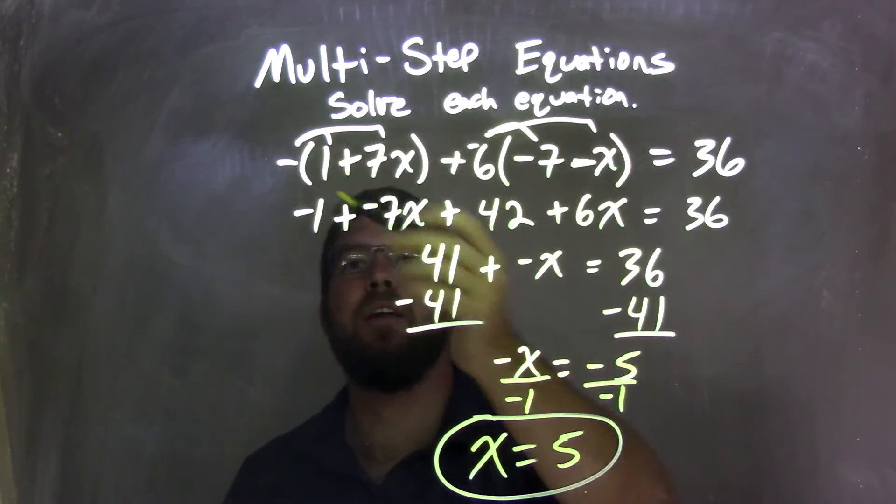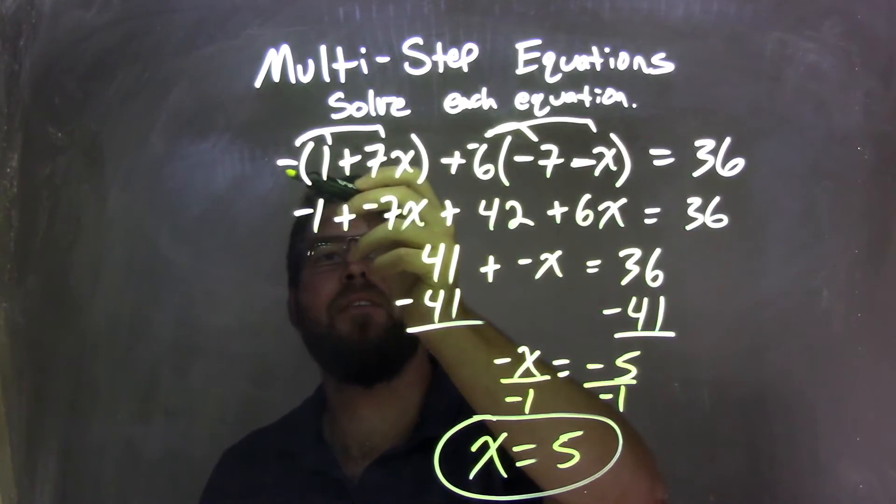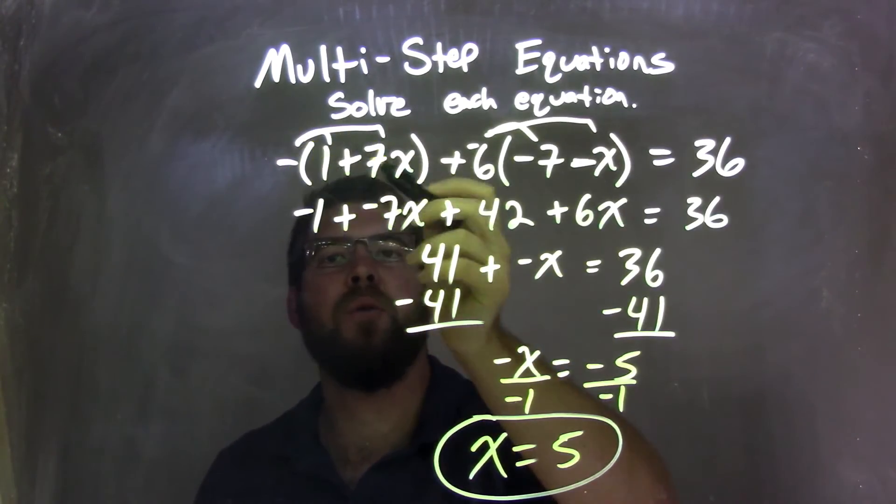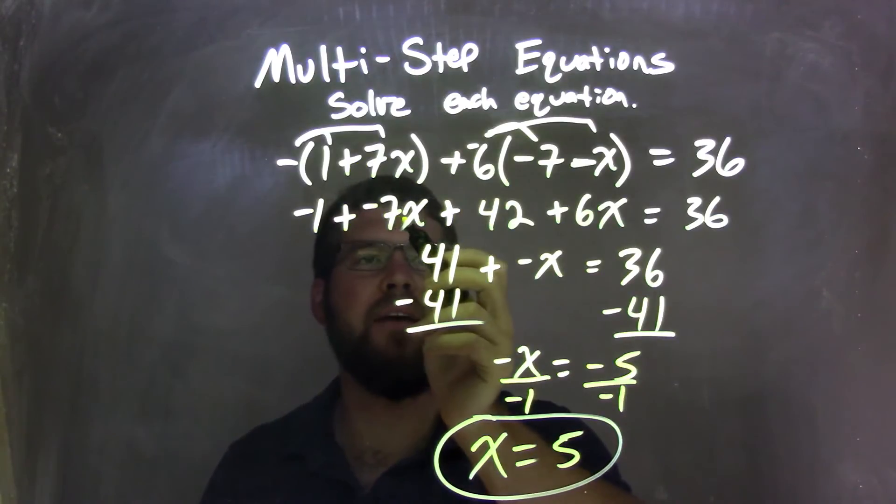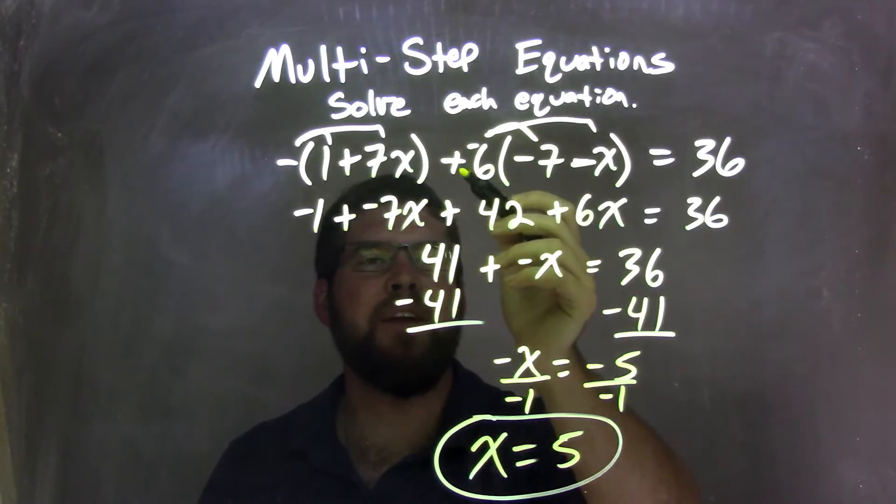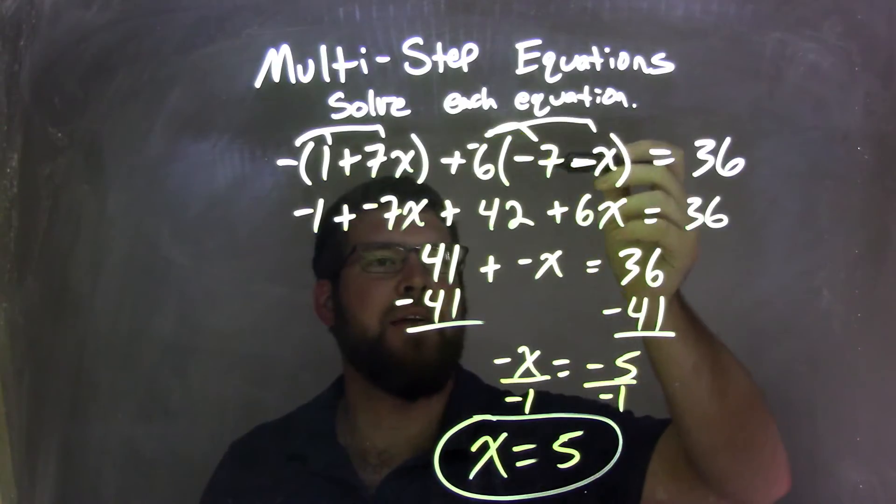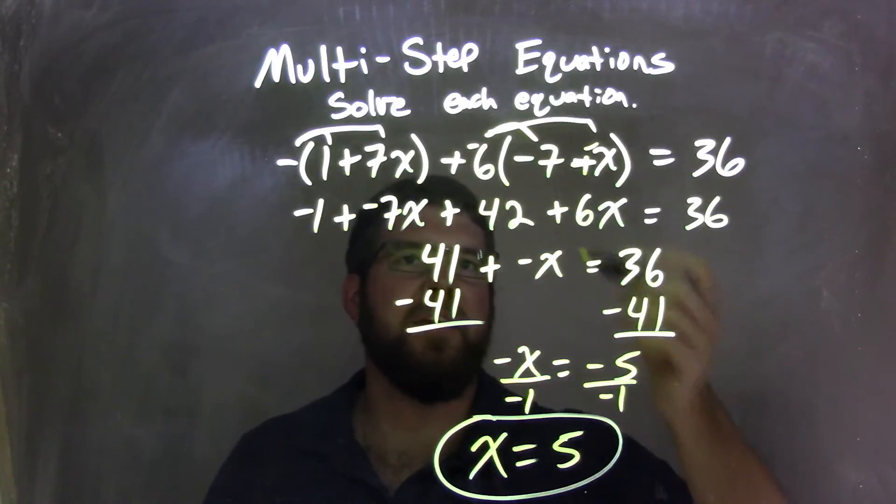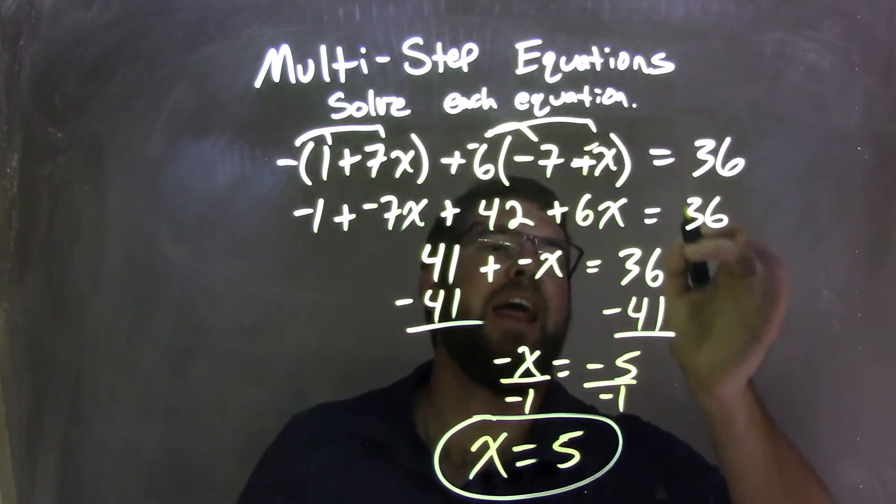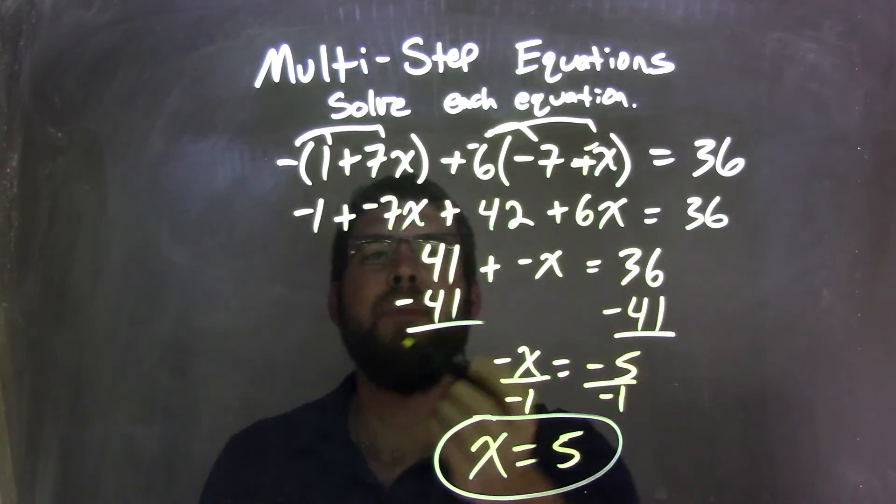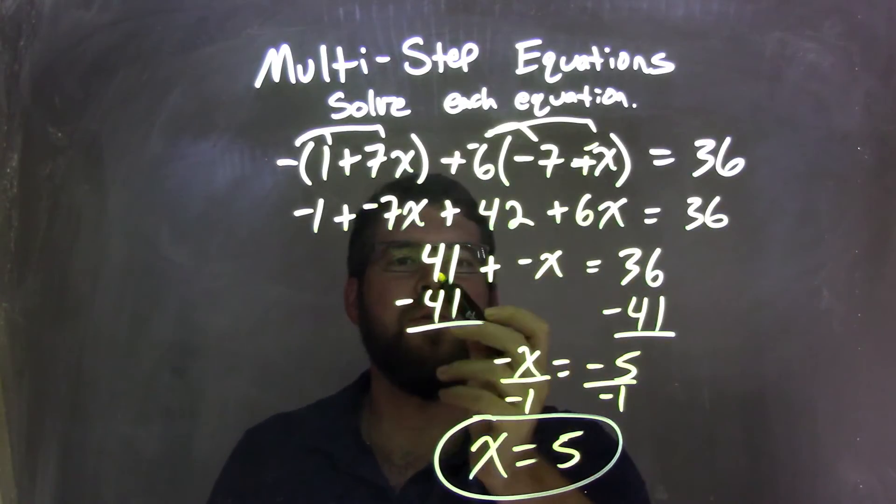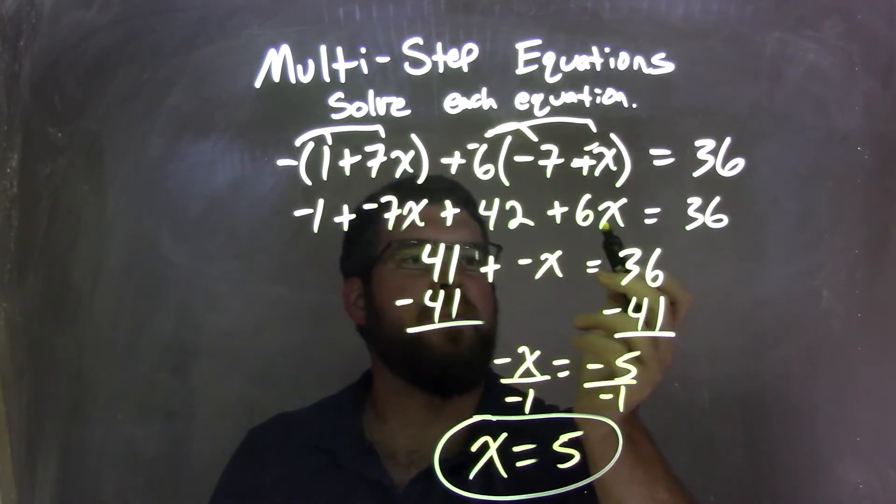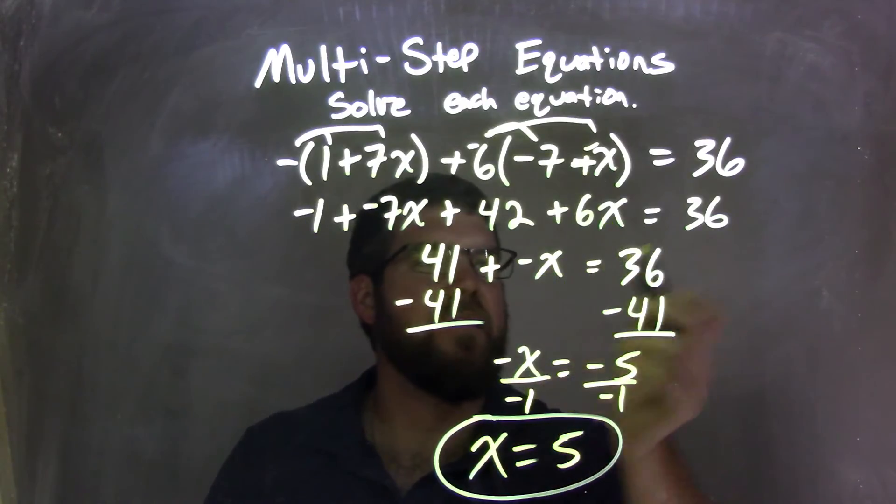So let's recap. We had a long problem here. Negative on the outside, I distribute the negative 1 across. You have negative 1 plus a negative 7x. This minus 6, I made it to be plus a negative. So when I distributed, negative 6 times negative 7 is a positive 42. And really, it was like a plus a negative x there. So negative 6 times a negative x is a positive 6x. And I just have the 36 over here. Combine my left terms. Negative 1 plus 42 is 41. Negative 7x plus 6x is negative x equals that 36.